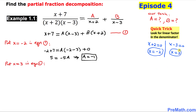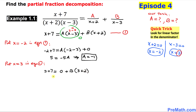Now we look at the next x value, which is three. We put x equal to three into equation number one. That becomes three plus seven equal to — now three minus three is zero, so zero times A gives zero — plus B times three plus two. Simplifying: 10 equals five B, which tells us that B turns out to be simply two.